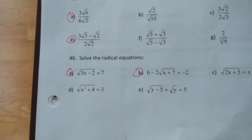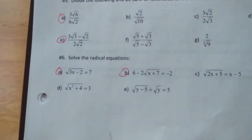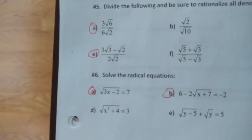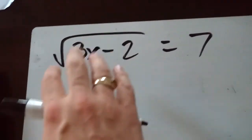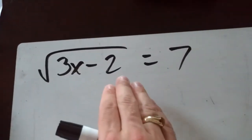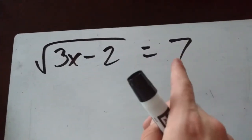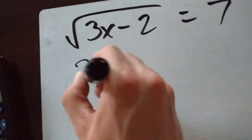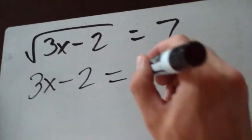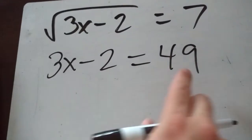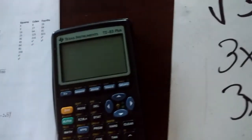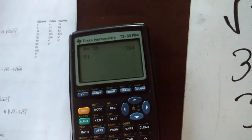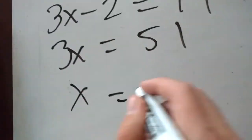Now for solving radical equations. First one: square root of 3x minus 2 equals 7. The key rule is to get rid of the radical — isolate it, then square both sides. Squaring both sides gives 3x minus 2 equals 49. Add 2 to both sides: 3x equals 51. Divide by 3: x equals 17.